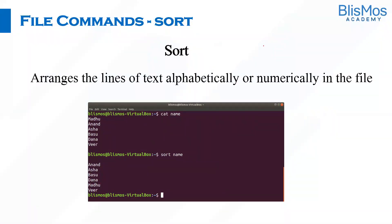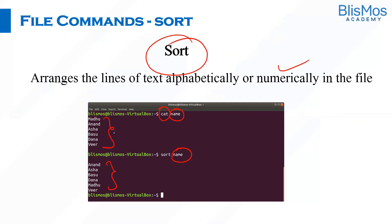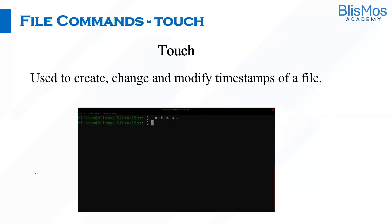Whenever you are working with a file, maybe you want to see the content of the file arranged in alphabetical order, or ascending order if they are numbers. In that case, we can use the sort command and give the name of the file. For example, using the cat command we can see the content of the file — they are not sorted. When you say sort and provide the file name, you can see names like Anand and Asha sorted in alphabetical order. We also have the touch command.